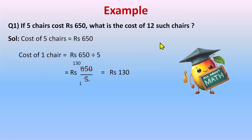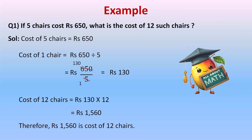Now we have the cost of one chair, which is rupees 130. The cost of 12 chairs will be 12 multiplied by 130, so the answer is 1560. Therefore, the cost of 12 chairs is rupees 1560. The concept is: first find the cost of one — divide; for many — multiply.